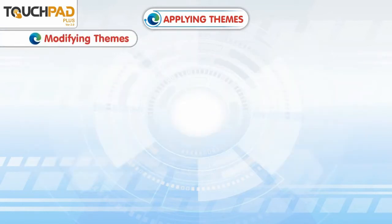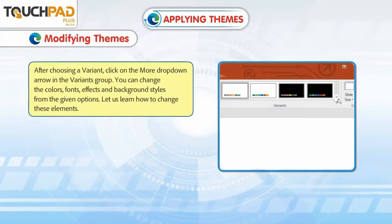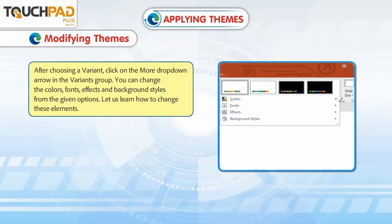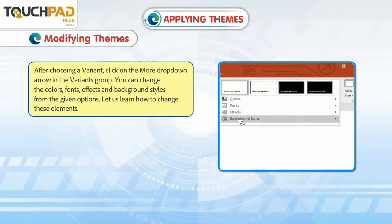Modifying Themes. After choosing a variant, click on the More drop-down arrow in the Variants group. You can change the colors, fonts, effects and background styles from the given options. Let us learn how to change these elements.